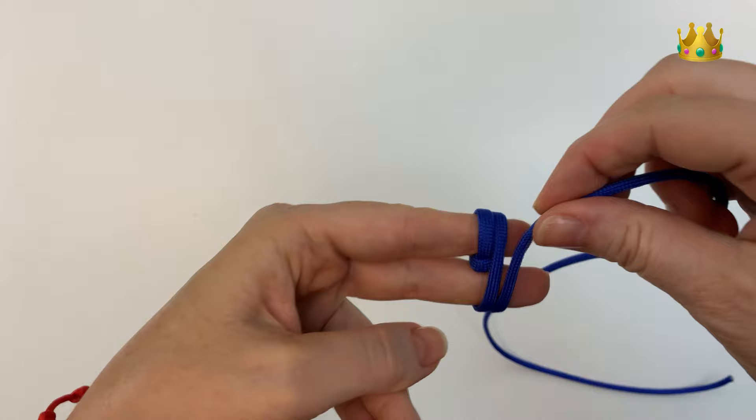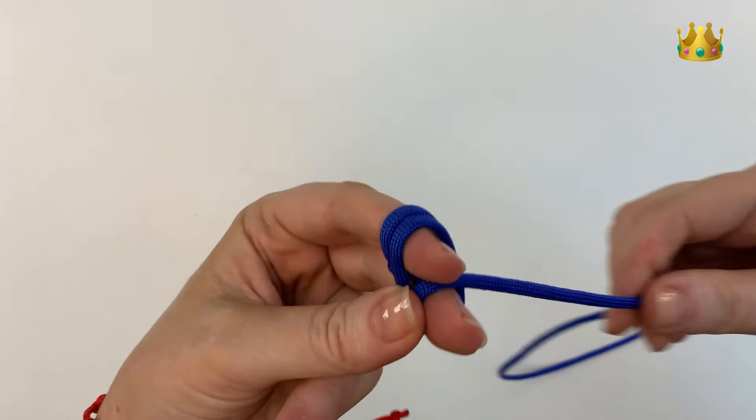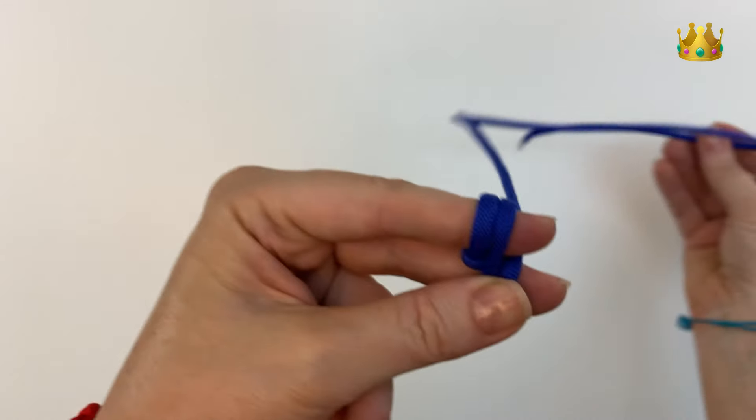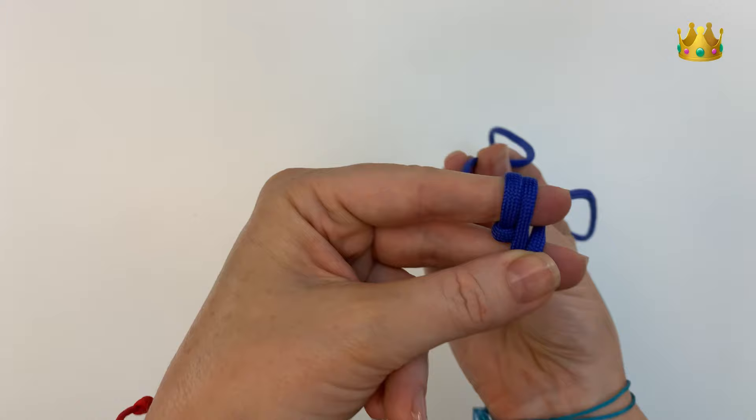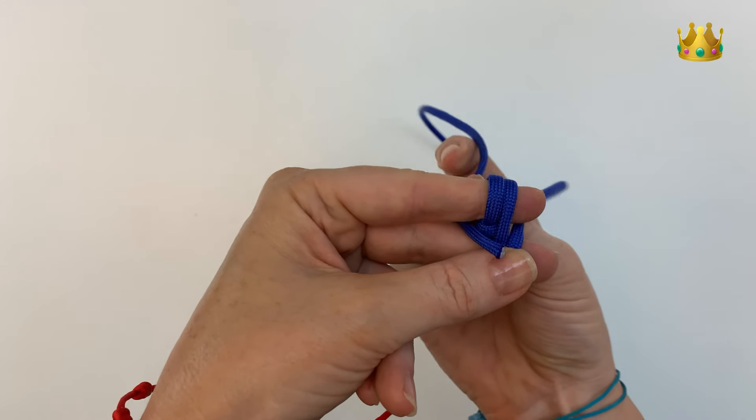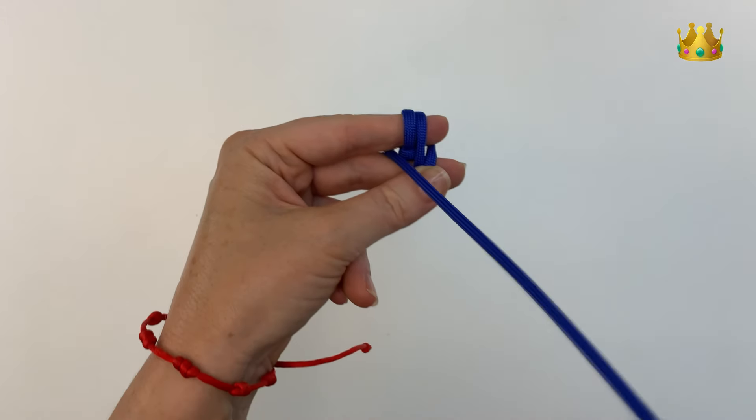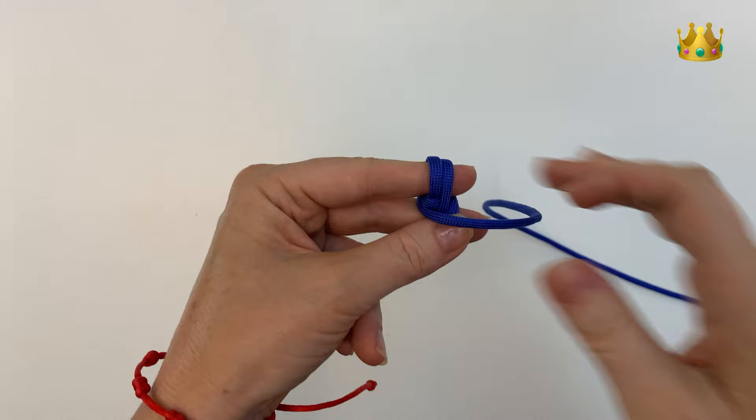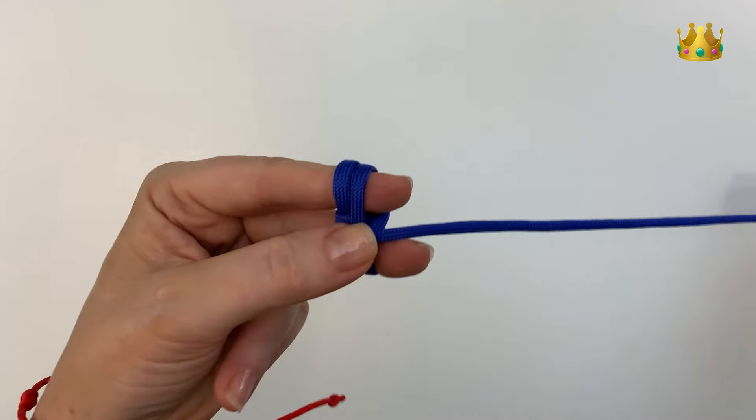So once you've got those we're going to bring this cord around to the right and through the tips of our fingers. And we're going to bring it around this way two times for our two layers, just bringing it in between our fingers there.